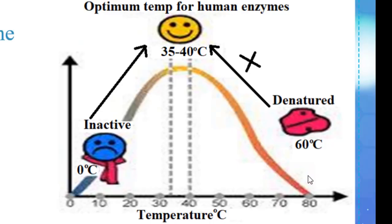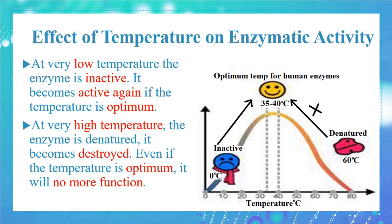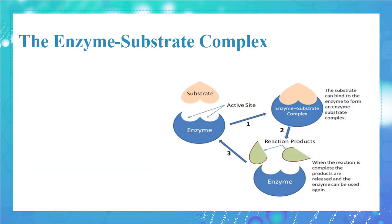At very low temperature, the enzyme is inactive — it becomes active again if the temperature is optimum. At very high temperature, the enzyme is denatured and destroyed; even if the temperature is later optimum, it will no longer function. To understand this effect, let's look at the enzyme-substrate complex.